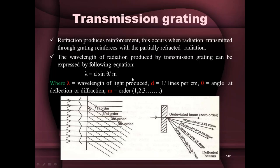The refraction produces reinforcement when radiation transmitted through the grating reinforces with the partially refracted radiation. The wavelength of radiation produced by a transmission grating can be expressed by the equation: lambda = d sin(theta) / m, where lambda is the wavelength of light produced, d = 1 / (lines per centimeter), theta is the angle of deflection or diffraction, and m is the order of radiation (1, 2, 3...).